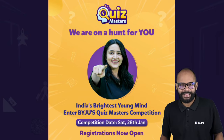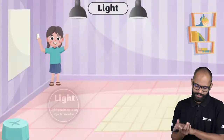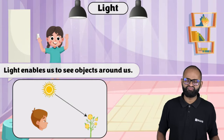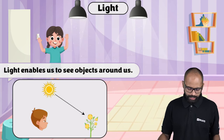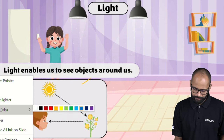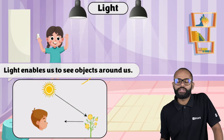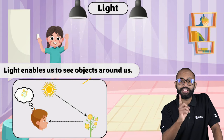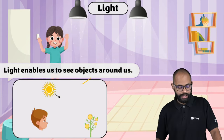Let's revise light, shadows and reflection. What is light? Light is an energy which enables you to see the objects around us. Light enables us to see objects around us — that was the basic meaning of light.